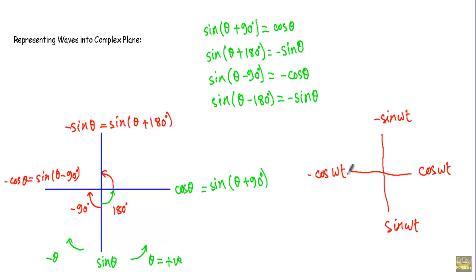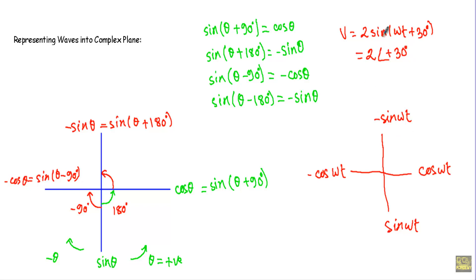To represent our alternating quantity in phasor form, let's say I have V equal to 2 sine omega t plus 30 degrees. Writing this in phasor form gives magnitude 2 at phase angle plus 30 degrees. Since this is the sine omega t axis, to get plus 30 degrees I rotate 30 degrees in the counterclockwise direction. I can represent the voltage V with magnitude 2, meaning the radius vector of the voltage phasor will have magnitude 2. This is the basic concept of mathematical representation of phasors.